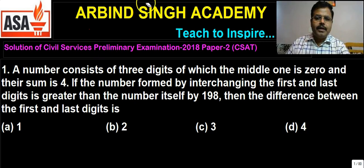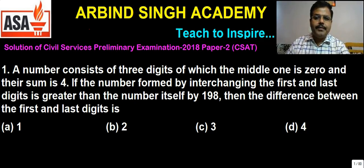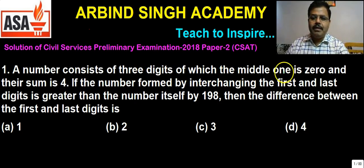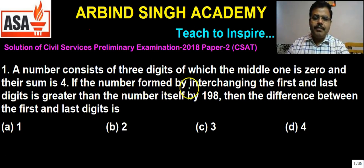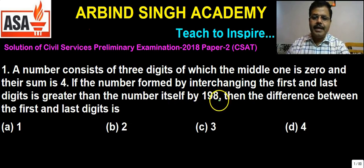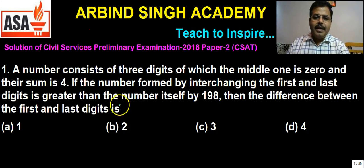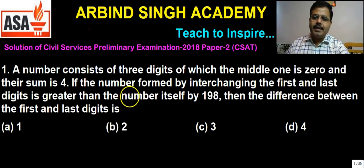The first question: a number consists of three digits, of which the middle one is 0 and their sum is 4. If the number formed by interchanging the first and last digit is greater than the number itself by 198, then what is the difference between the first and last digit? Clearly, the first and last digits are different — otherwise, interchanging them would not give a different number.